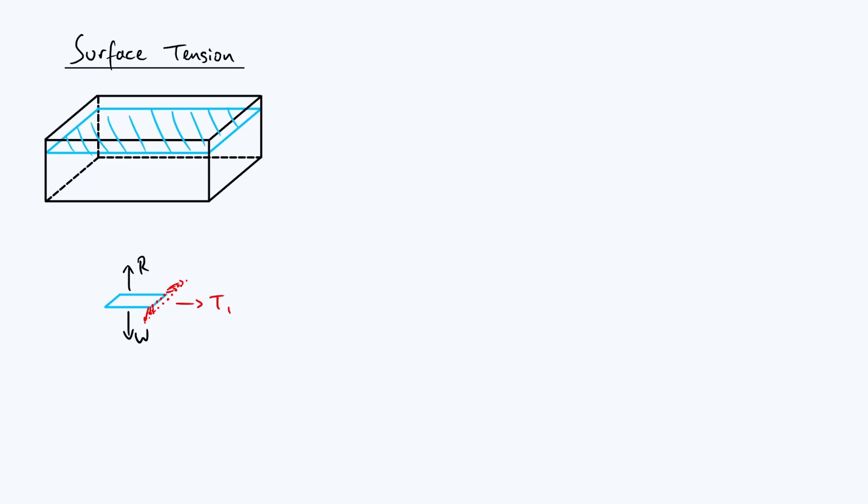There will also be some downwards component of the force because molecules just below the surface are pulling on the molecules at the surface. But we can absorb that vertical component into this generic reaction force R. By definition, the surface tension T1 is the component of the attraction that acts in the plane of the surface.